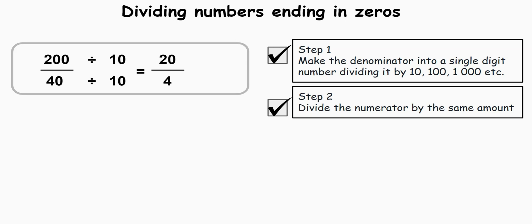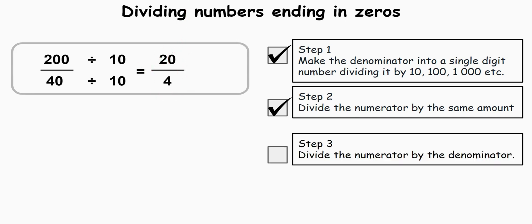We've completed our second step, which was to divide the numerator by the same amount. Now we've created a problem that is much easier to solve. Our third and final step is to divide the numerator by the denominator — our dividend by our divisor. And 20 divided by 4 equals 5.